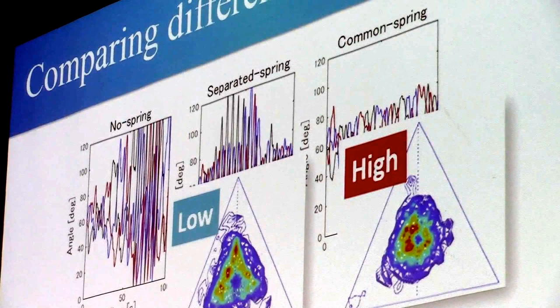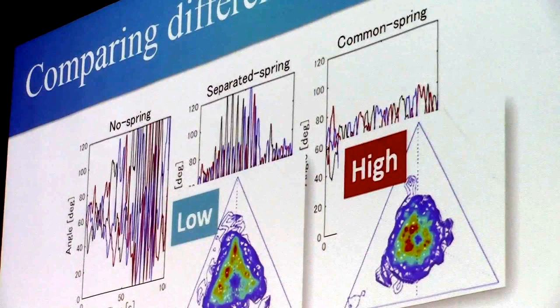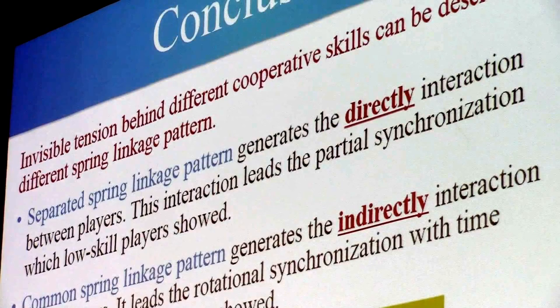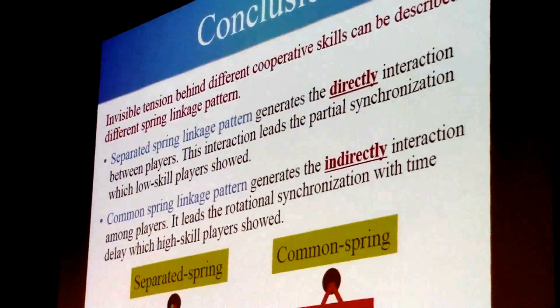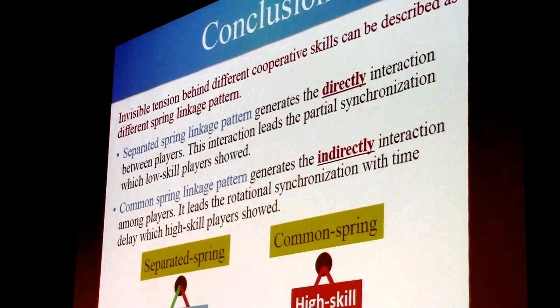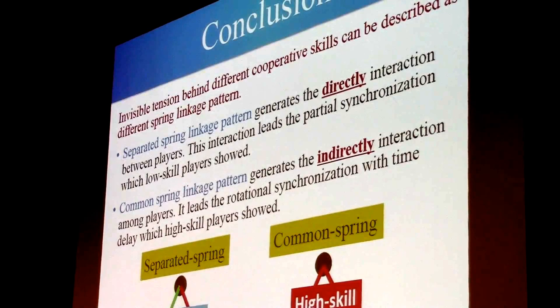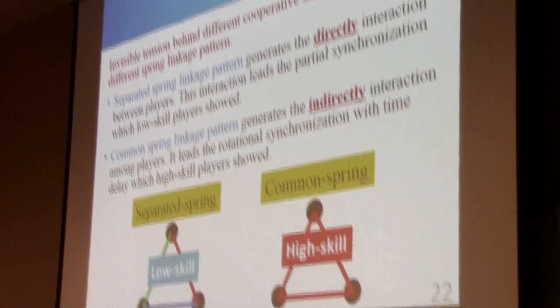This result means that separated spring linkage generates low cooperative skill, while common spring linkage generates high cooperative skill. In conclusion, this study demonstrates that the invisible tension behind different cooperative skills can be described by different spring linkage patterns. Separated spring linkage generates direct interaction between players, leading to partial synchronization. Common spring linkage generates indirect interaction among players, leading to rotational synchronization with time delay, which is what high skill players showed.